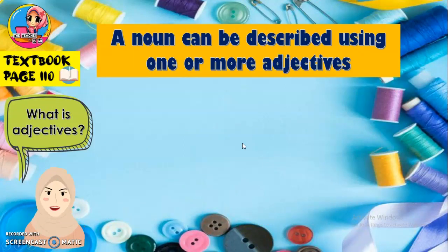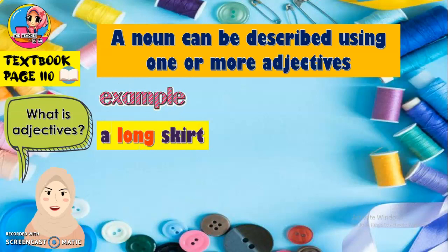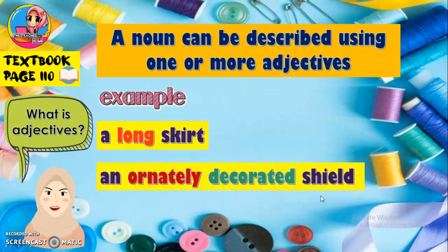A noun can be described using one or more adjectives. Kata nama boleh diterangkan menggunakan satu atau lebih dari satu adjectives. Example: 'long skirt' — only one adjective, 'long', is used here for the noun 'skirt'. 'An ornately decorated shield' — there are two adjectives for the noun 'shield'. Shield means perisai. The adjectives are 'ornately' — berkerawang, and 'decorated' — dihiasi.